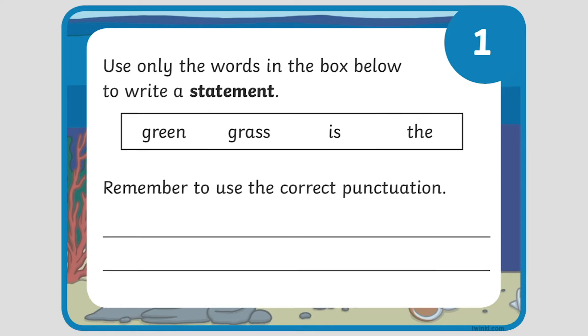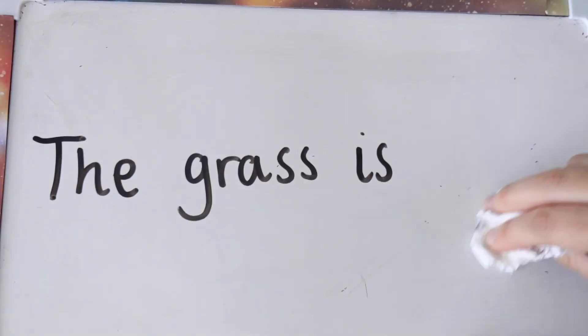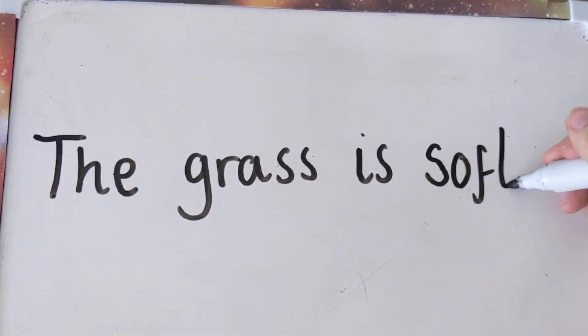As a follow-on activity, discuss with your child any words in the sentence which could change, without changing the type of sentence it is. For example, in this statement sentence, you could change the adjective or even the noun.